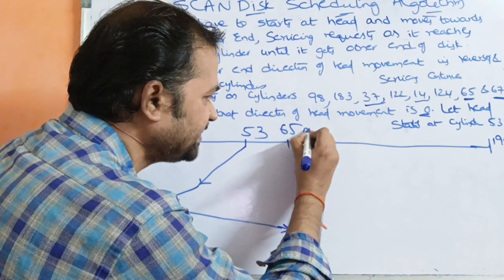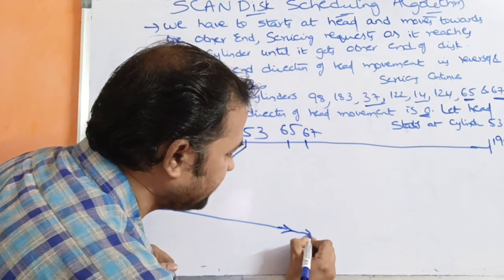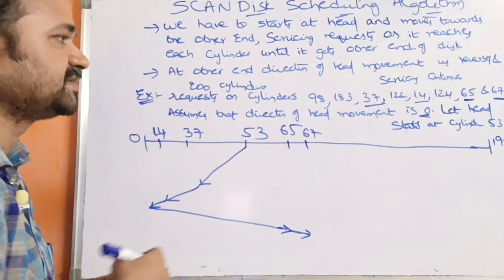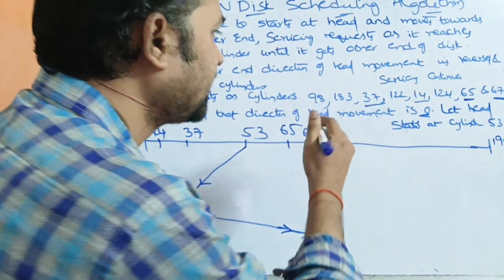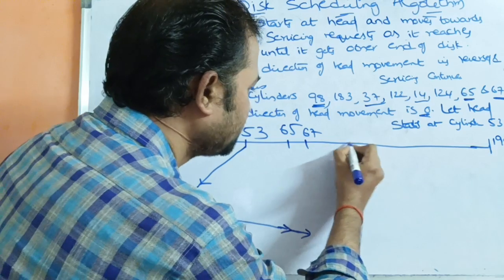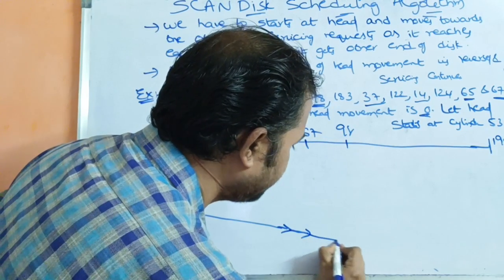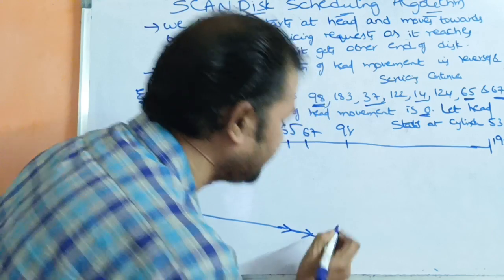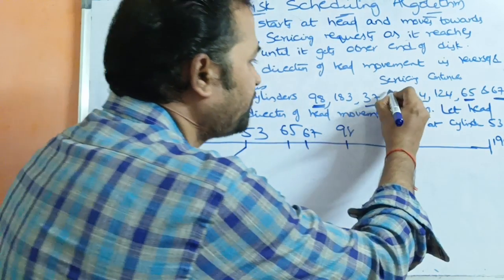After 65, we encounter cylinder 67 at the next position, and that data is processed. After 67, we have cylinder 98, which is then served.